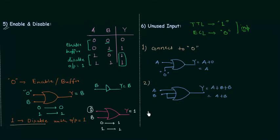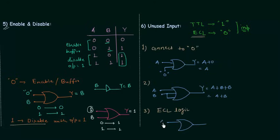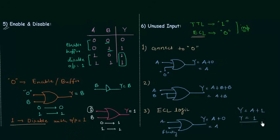The last way to deal with unused input is to keep it open if we have ECL logic. In TTL logic we cannot keep it open because that makes the unused input equal to 1, and 1 is disable for OR gate. So if it is ECL logic, we can simply keep the unused input floating — the output Y equals A OR 0, which equals A. But if it is TTL logic, floating input equals 1, giving A OR 1 equals 1, so output is fixed at 1. We don't keep it floating when we have TTL logic.